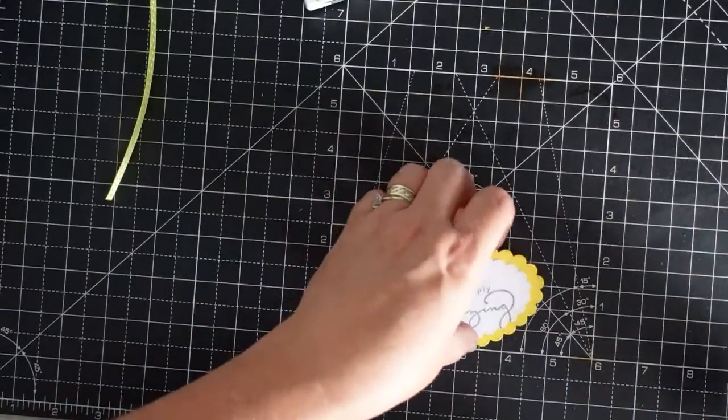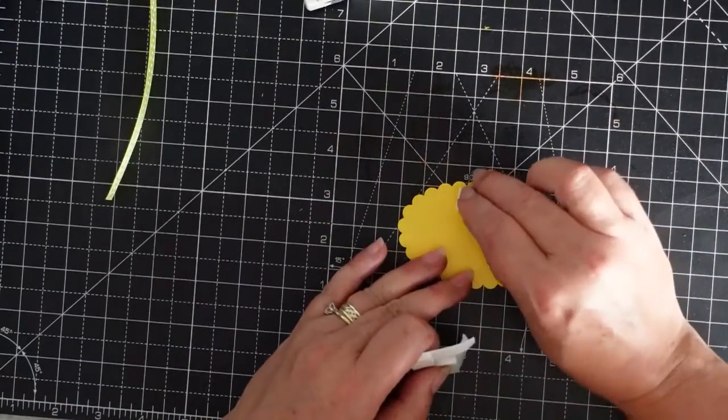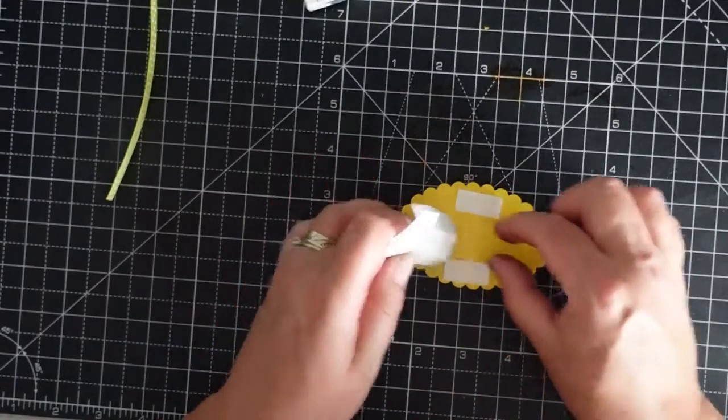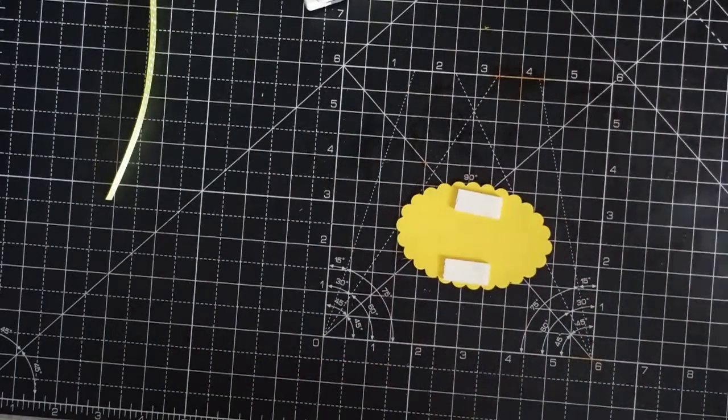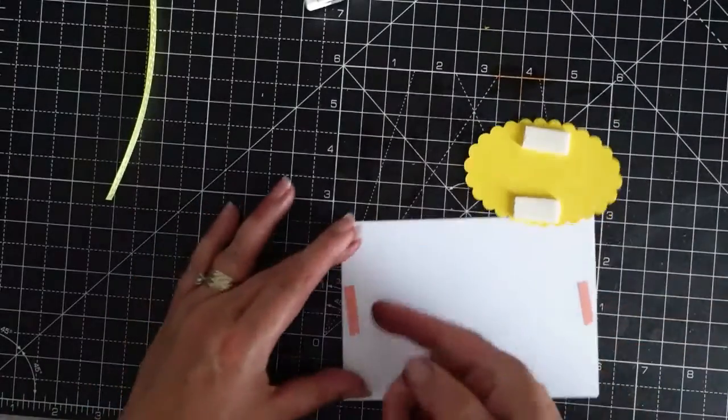And then I want to, one there and one there, so the ribbon can go through. And it's sticking, so I'll take the backs off.